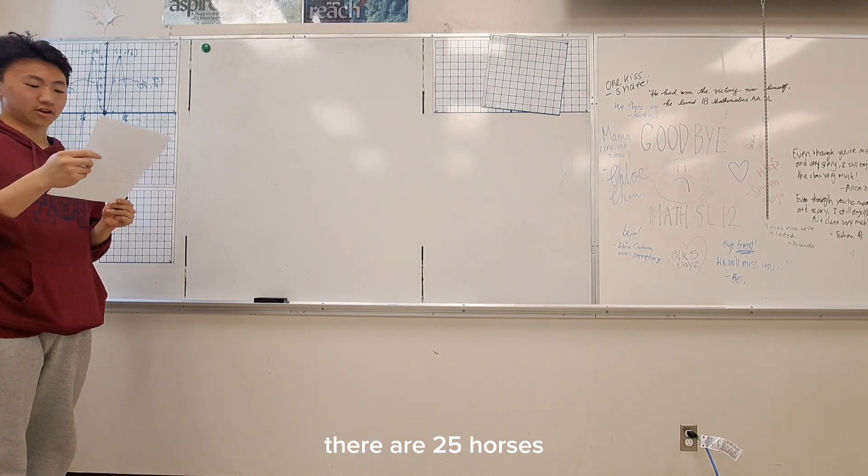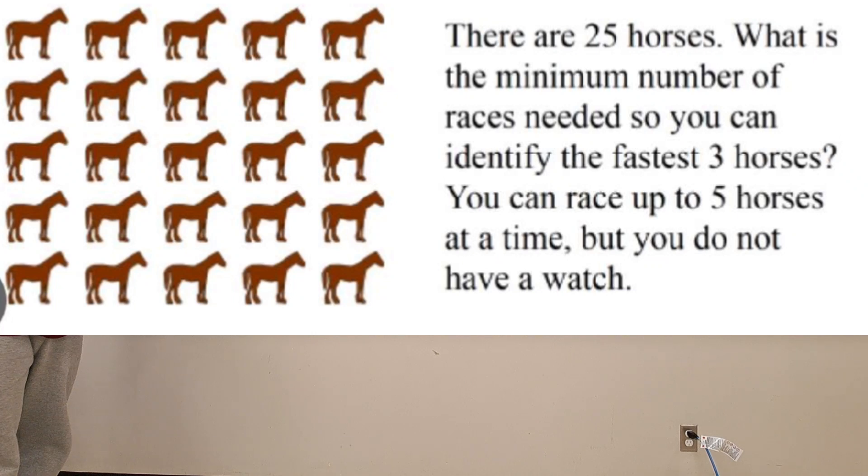So here's the problem: there are 25 horses. What is the minimum number of races needed so you can identify the fastest three horses? You can race up to five horses at a time, but you do not have a watch.